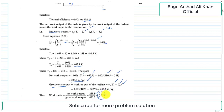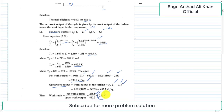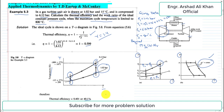So in this example these two required quantities — thermal efficiency of 40.1% and work ratio of 0.553 — were calculated and discussed for example 5.3. Thank you.